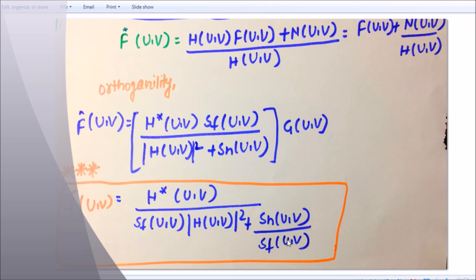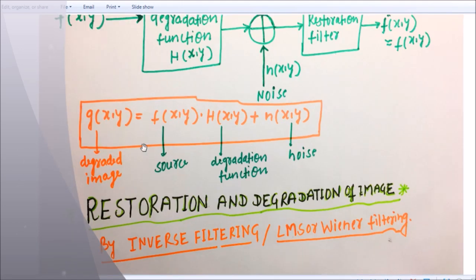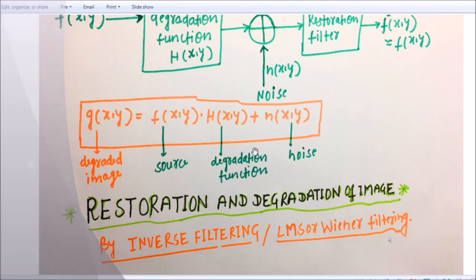So here you can see: this is the source, this is the degradation function, this is the noise, and this is the degraded image. I hope you understood — I explained only the theory, but this is very important for university exams, GATE, and IES. If you understand the theory, you can solve the questions. Please watch it properly. Thank you for watching, and if you like this video, don't forget to subscribe.